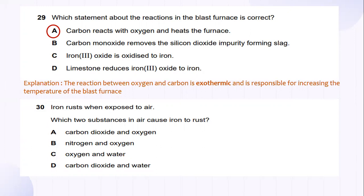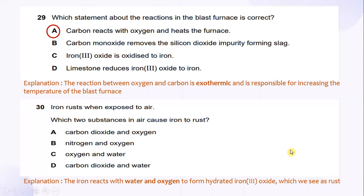So, iron rusts when exposed to air. Which two substances in air cause iron to rust? So, the iron reacts with water and oxygen to form hydrated iron(III) oxide, which we see as rust. So, the answer for this is C.